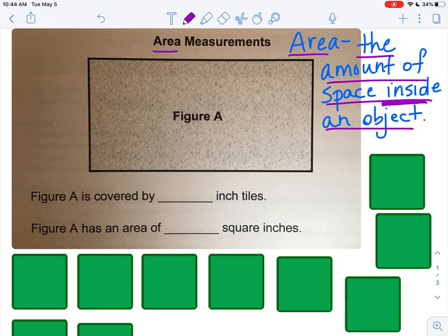So you're probably thinking, how are we going to find the area? Super simple. We're going to use these inch tiles. We've got these green color tiles that are each an inch, and we're just going to move them into our shape and see how many tiles will fill up our shape, because we're looking for the amount of space inside the object. That's what area is.